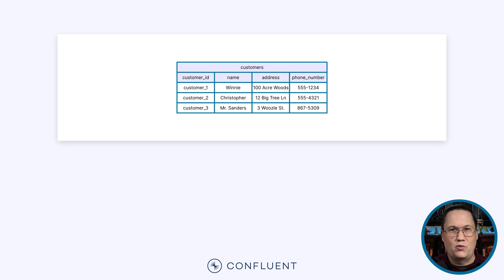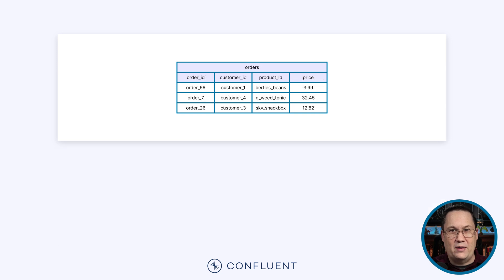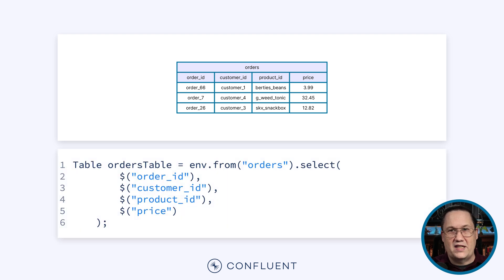Imagine an e-commerce system with a table containing customers, including a customer ID, name, address, and phone number. We could query the table and extract the fields with a simple SELECT statement. Now imagine another table that contains orders, including the order ID, customer ID, product, and price. We could query that table with a simple SELECT statement as well.